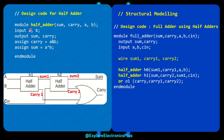These two half adder instances — h0 and h1 — are parts of the full adder. In the half adder instantiation, you can see sum, carry, A, B are the ports. For h0, in place of sum it generates sum1, but sum1 is not part of the port list, so we declare connection wires. In Verilog, we declare wire sum1 to connect the output of half adder h0 to the input of half adder h1.